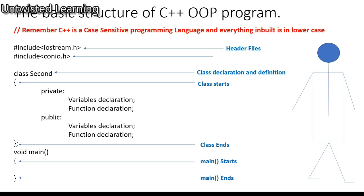Now we will see the basic structure of a C++ program. Remember, C++ is a case-sensitive programming language — everything built-in is in lowercase. First, it starts with inclusion of header files. In previous lectures we included iostream.h and conio.h. Then it starts with the class definition.